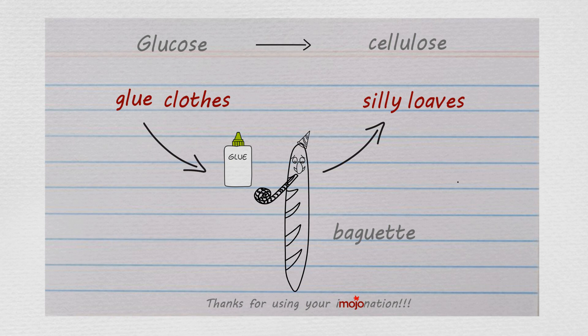So glucose can be rolled into silly loaves, or as a biologist would say, glucose can be converted into cellulose. And you know already from the plant cell video that cellulose is used for cell walls.